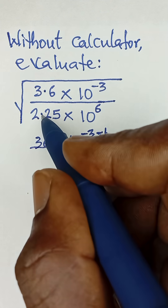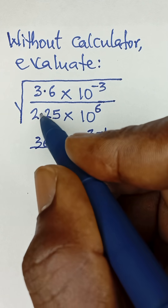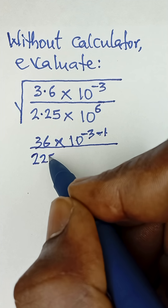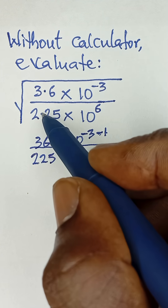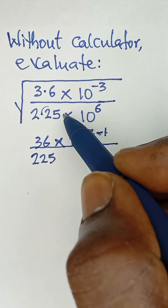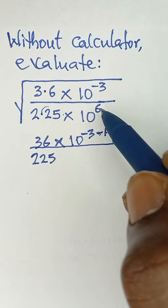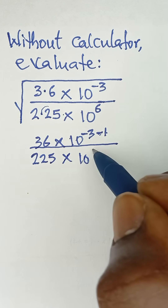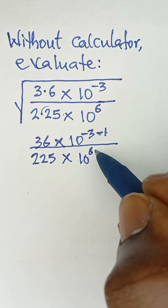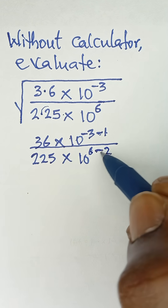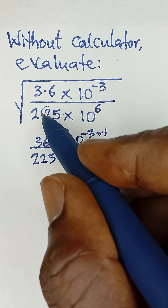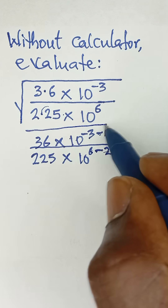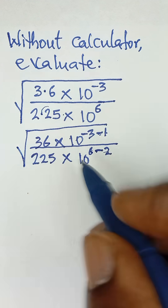2.25 can be expressed as 225. To do that, we moved the decimal point twice, so we subtract 2 from this power — it becomes 10 raised to the power of 6 minus 2. We are subtracting 2 from the power because we moved the decimal point twice. Don't forget the square root sign has to be there.